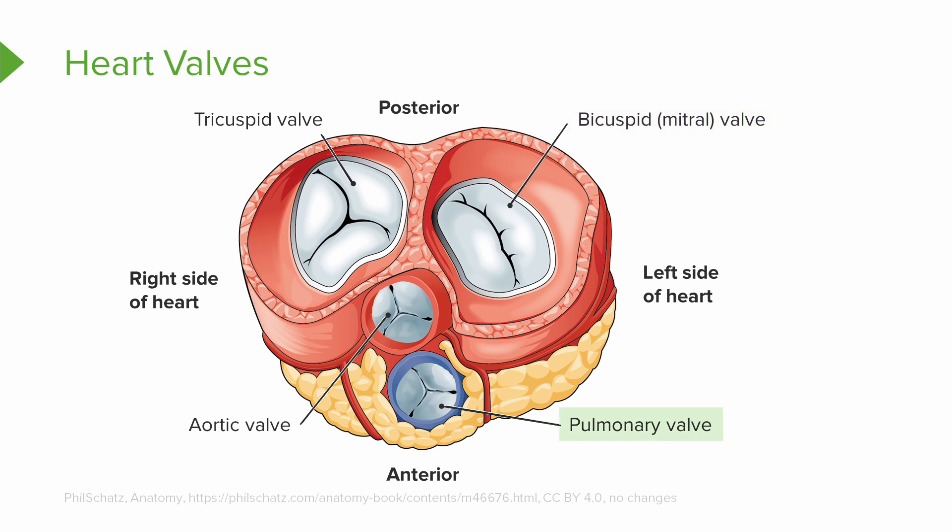The next valve is going to be the pulmonary valve. The pulmonary valve is a semilunar valve on the right side of the heart that separates the right ventricle from the pulmonary trunk. We also have the aortic valve. The aortic valve is also a semilunar valve, and this is going to separate the left ventricle from the aorta.